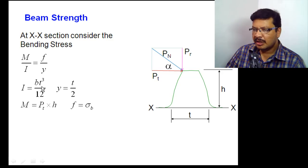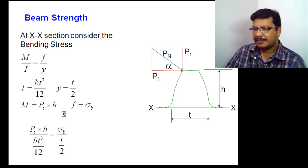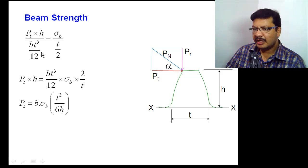Now, you substitute I, M, y and fb values in this equation. After substitution, you will get something like this. Here, my aim is to find the tangential force, the amount of tangential force that the gear teeth can transmit. That I want to find. That is why we solve for Pt. Rearrange it and solve for Pt. Then after simplification, finally you will get Pt value as b into sigma b into t²/6h.